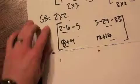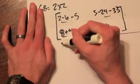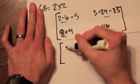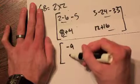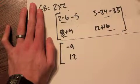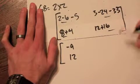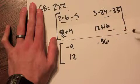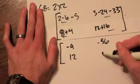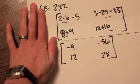Our last step is just to do the arithmetic and find our elements. So 2 minus 6 gives me negative 4, minus 5 gives me negative 9. 8 plus 4 gives me 12. Moving over here, I've got 3 minus 24, that gives me negative 21, minus 35, that would give me negative 56. Down here, 12 plus 16 gives me 28. And that would be our answer.